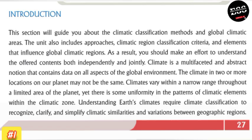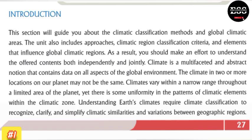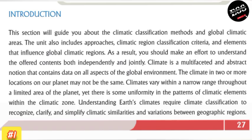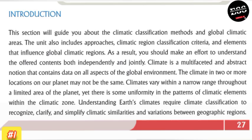The climate of two or more locations on our planet may not be the same. Natural climate can vary within a narrow range throughout a limited area of the planet, yet there is some uniformity in the patterns of climate elements within a climate zone.